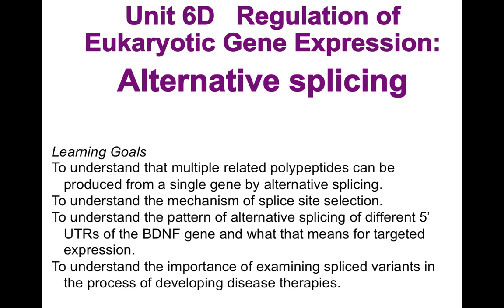Our learning goals are to understand that multiple related polypeptides can be produced from a single eukaryotic gene by alternative splicing, to understand the mechanism of splice site selection, to understand the pattern of alternative splicing of different 5' untranslated regions of the brain-derived neurotrophic factor gene and what that means for targeted expression, and to understand the importance of examining splice variants in the process of developing disease therapies.